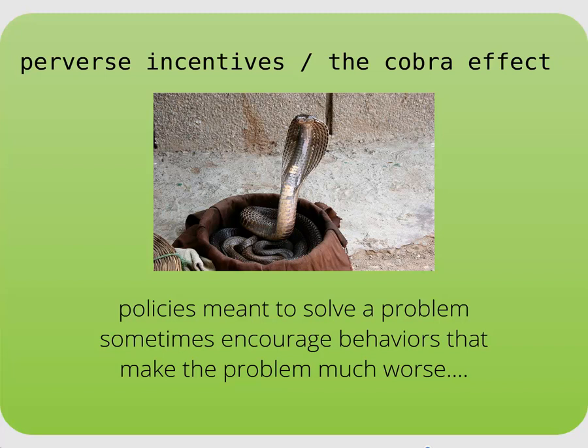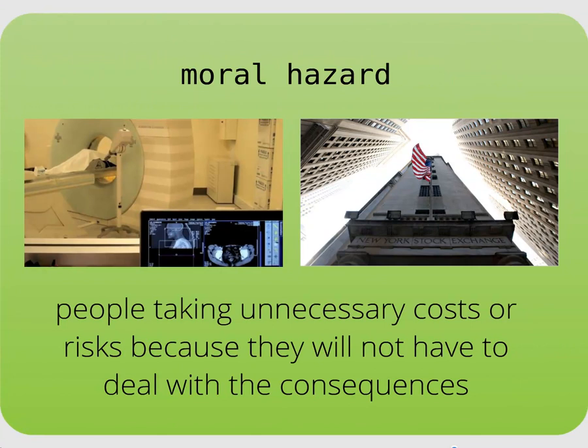This is actually a really common criticism of certain welfare policies, especially universal entitlement policies. The idea being that if welfare policies are too generous, lots of people will just stay on the policies instead of trying to get out of the bad situations that made them seek out assistance in the first place. A closely related concept is moral hazard — another kind of unintended consequence — which happens when a policy causes people to take unnecessary risks or incur extra costs because they will not have to deal with the consequences.